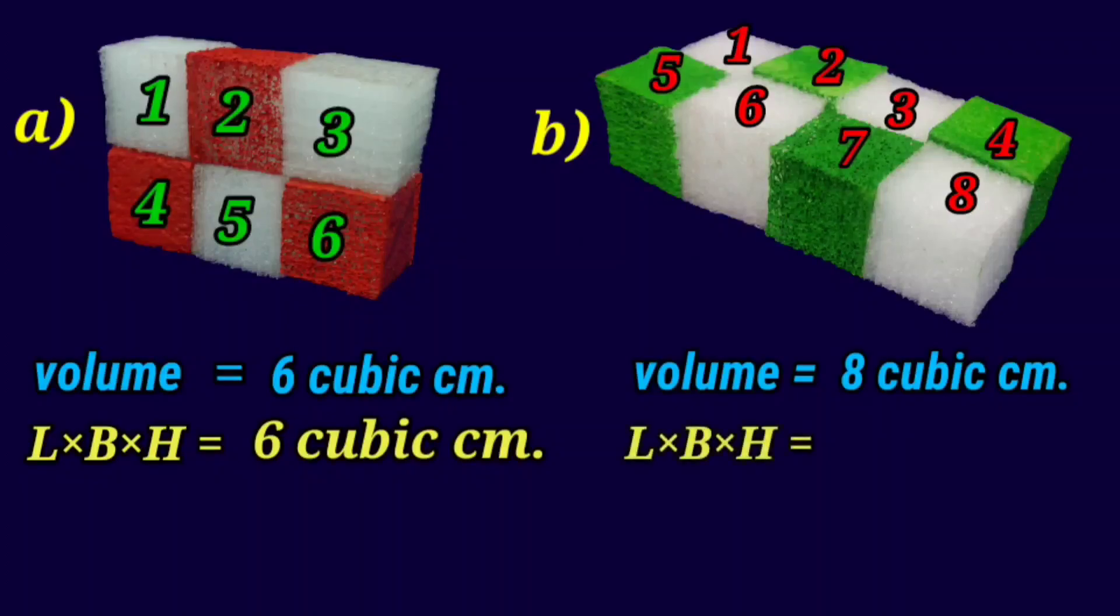Similarly, figure B has a length 4 cm, breadth 2 cm, and height 1 cm. And the product of 3 sides is 8 cm³.